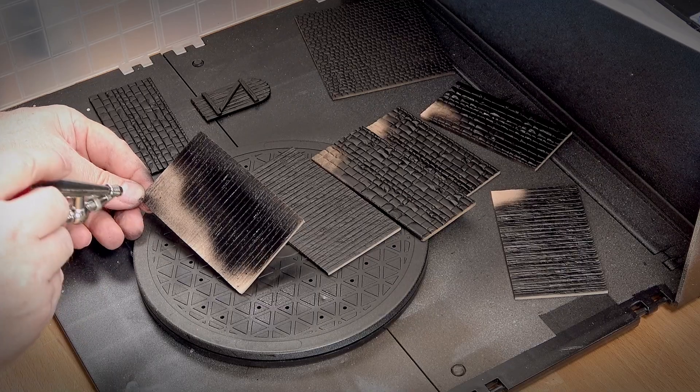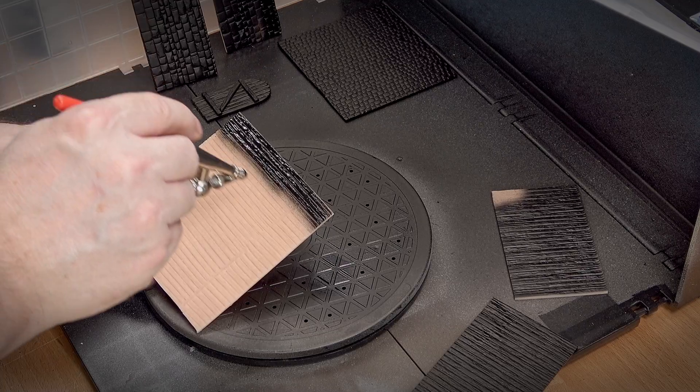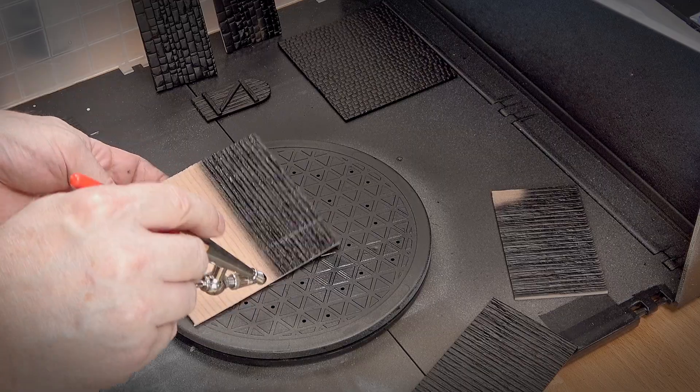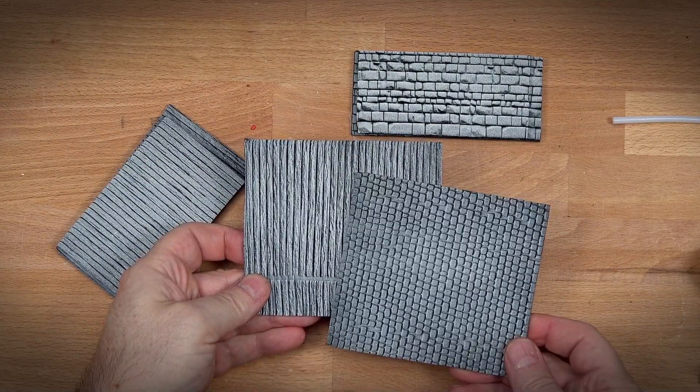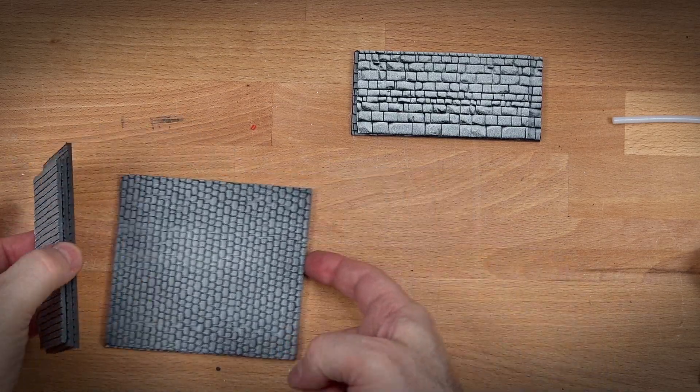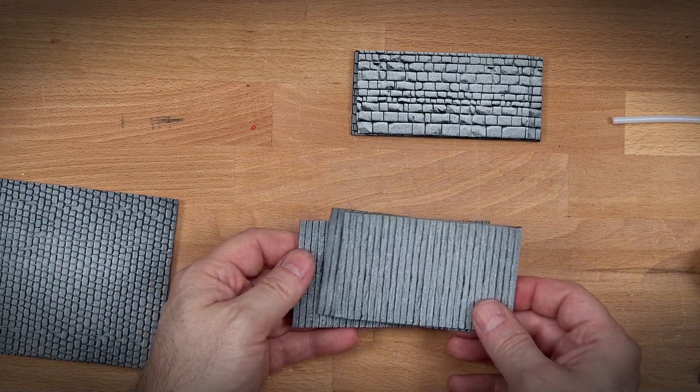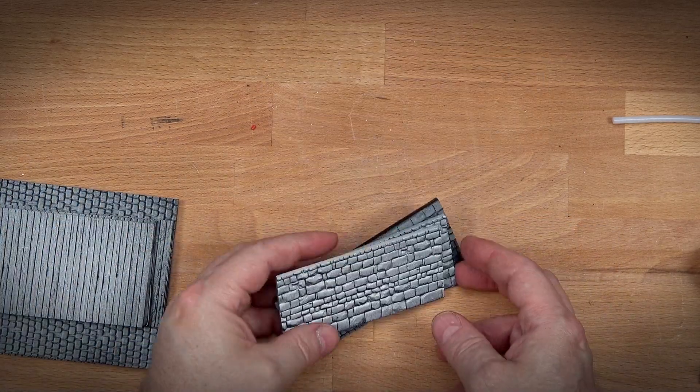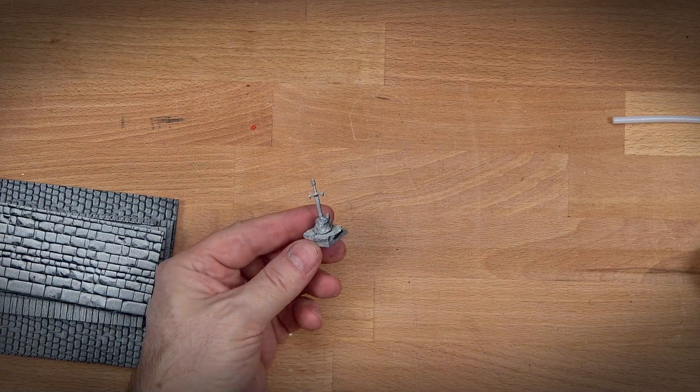Once everything's baked, they need a little bit of primer. So this is some Vallejo Black. Airbrush makes this go a lot faster. This just ensures that the paint will stick and it covers up that lovely flesh colored polymer clay. I hit them with a bit of a zenithal highlight with some lighter white primer. This may or may not be necessary depending on how you paint. It's probably not really necessary for me because I tend to paint opaquely. But if you use speed paints or washes and glazes, this is a great way to get a lot of light and dark established.